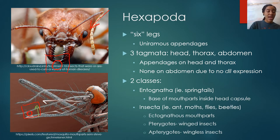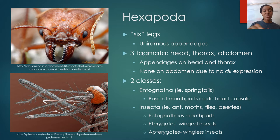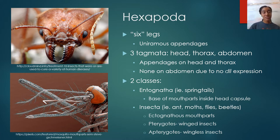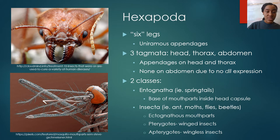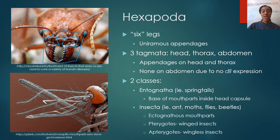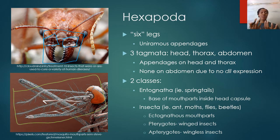The other main class of hexapods is Insecta, which includes ants, flies, moths, beetles, bees, and all the things you would normally think of as insects. One key characteristic is that they have ectognathous mouthparts — their mouthparts are located on the outside of their head. You can see this very clearly in an ant, with obvious mandibles and the entirety of the jaws outside the head capsule. The same is true for a mosquito, whose mouthparts are all located outside the head.